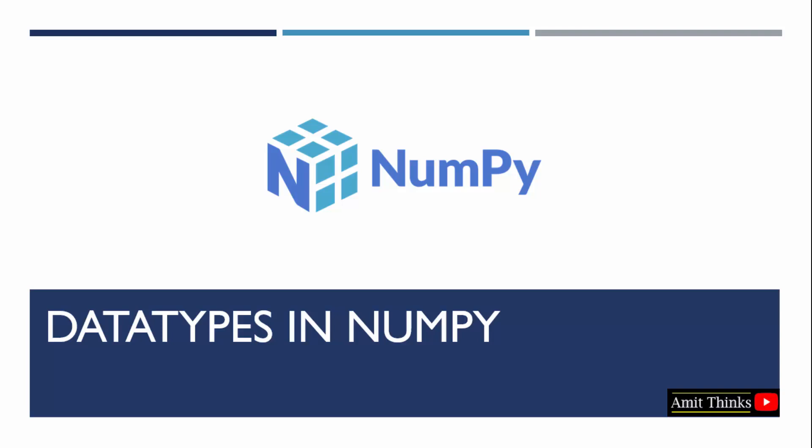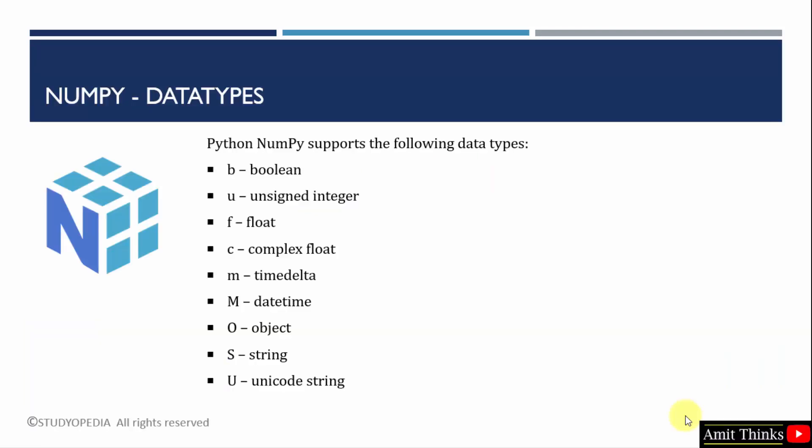In this video, we will learn about the data types in NumPy. Consider data types as a collection or categorization of data items. For example, we can have string data types, integer data types, boolean data types, and others.